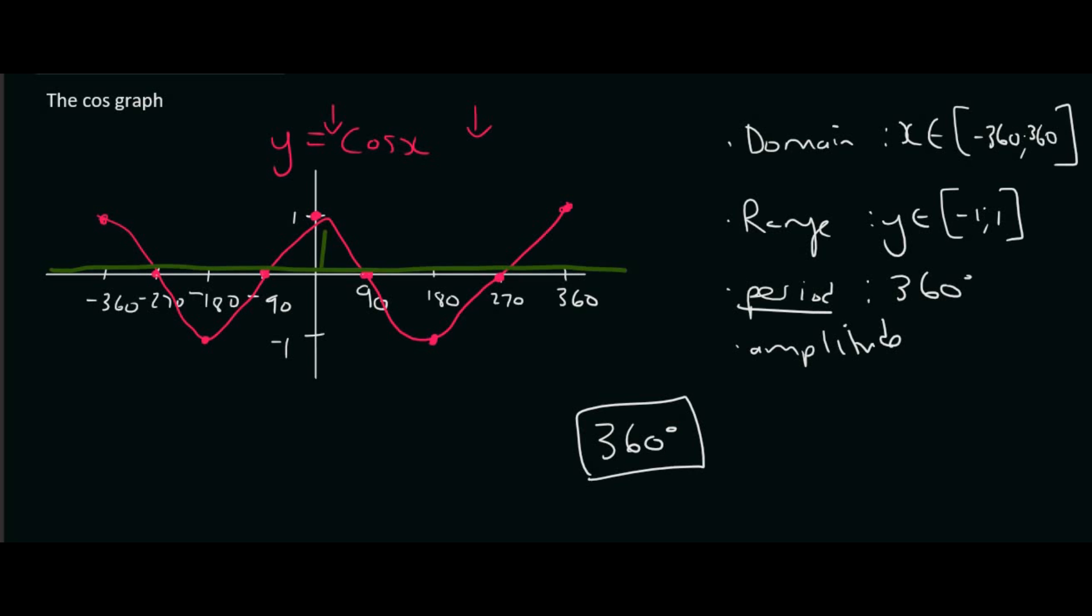Then you need to look at the distance to the highest point. Well, that's a distance of 1 because the green line is at a y value of 0 and then it goes up to a y value of 1. So the amplitude of this graph is just going to be 1.